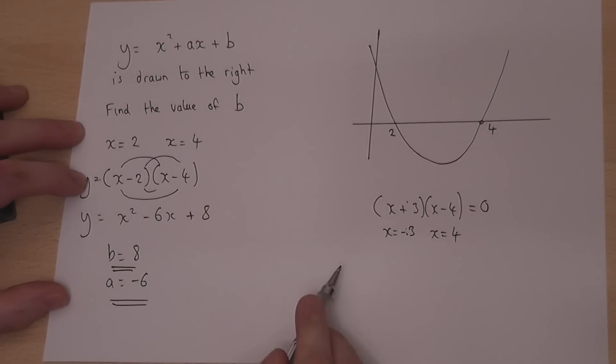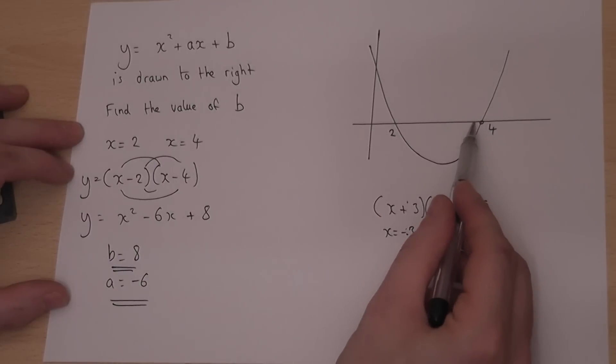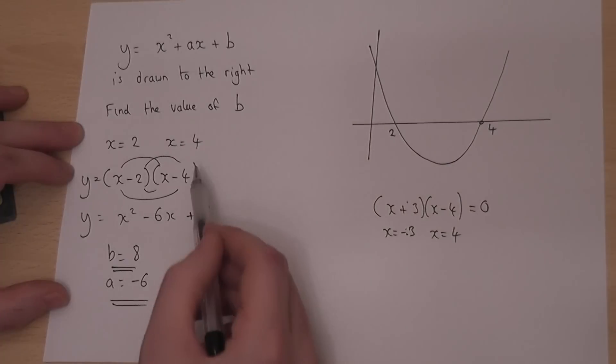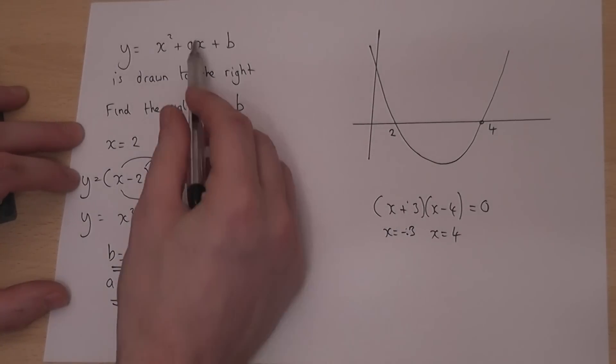So to summarize, normally, having factorized, we can find the solutions. These solutions are where the graph hits the x-axis, so conversely, if we know the solutions, we can work backwards to find the equation, which I can then expand and therefore find, if necessary, b and a.